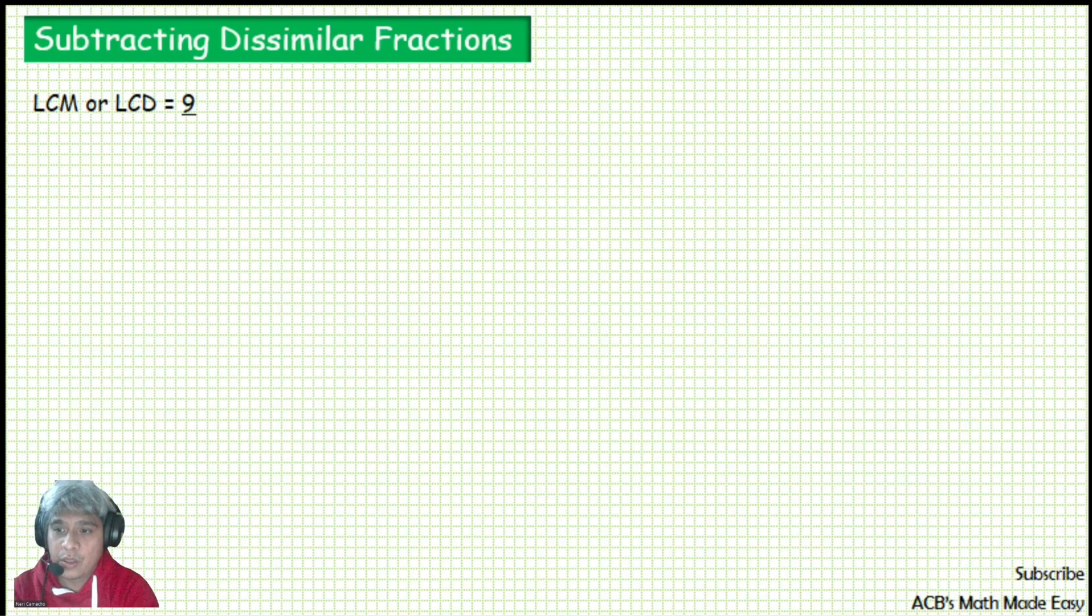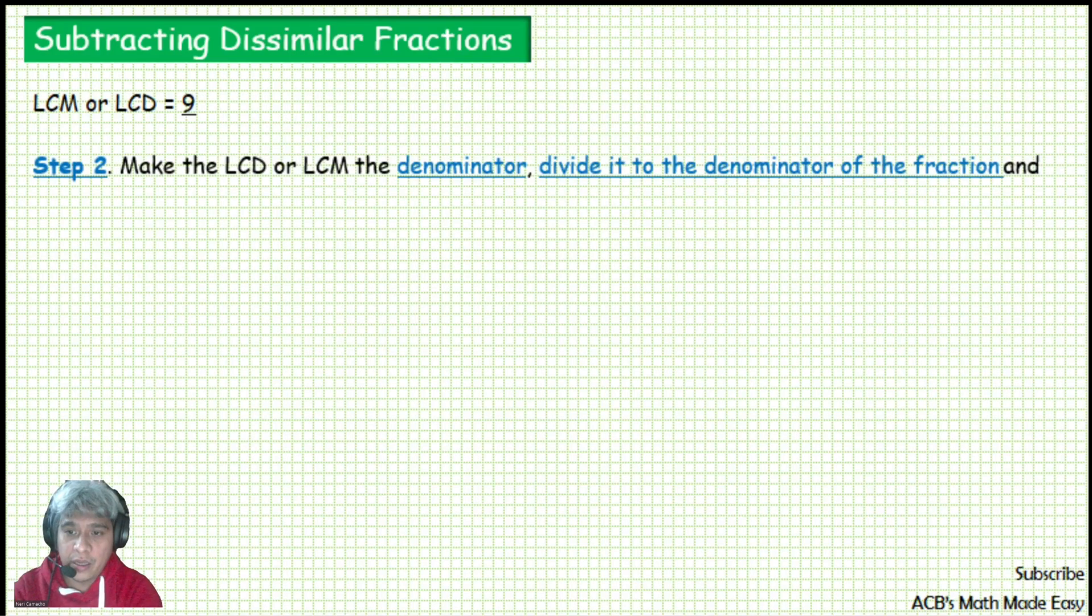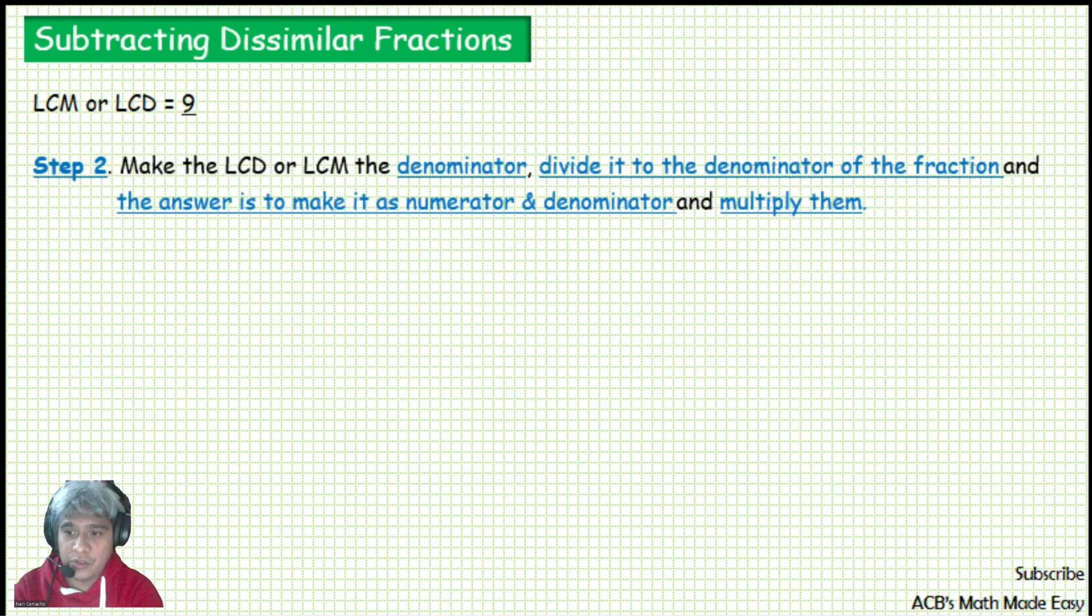We have our LCD of 9. Next thing to do is to make 9 as the denominator and divide it to the fraction denominator. The answer is to make it the numerator and denominator and then multiply. This is our LCD 9, and these are our fractions.